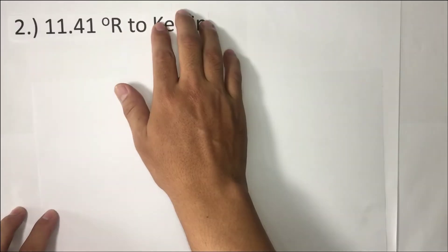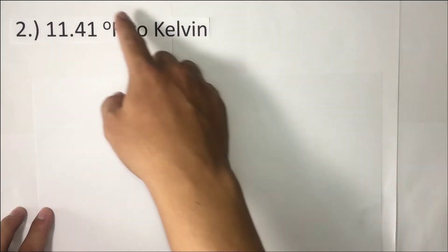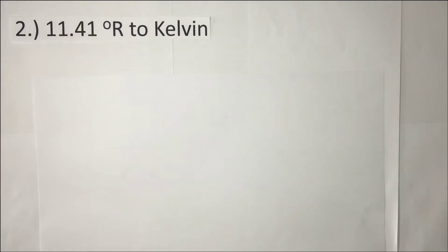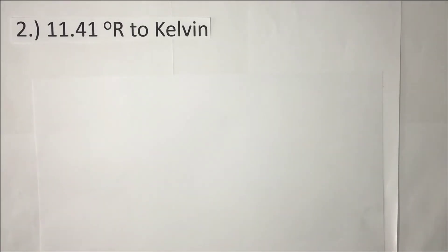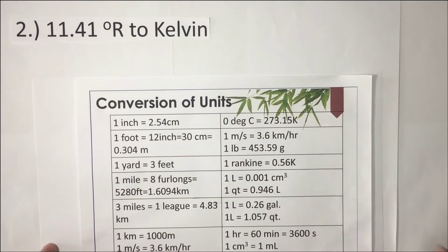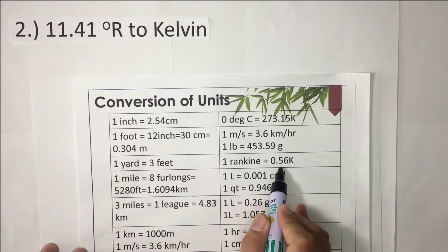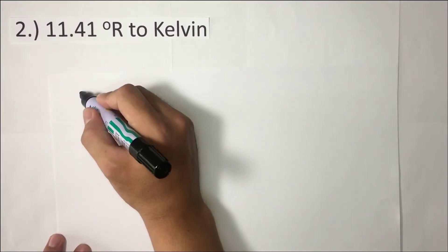Another example: 11.41 degrees Rankine to Kelvin. We all know that Rankine is a unit of temperature used for very low temperatures. Let's look up the value for degrees Rankine to Kelvin in our conversion table. According to the conversion table, 1 Rankine is equivalent to 0.56 Kelvin.